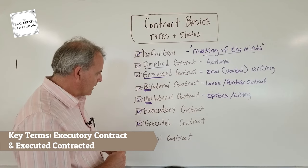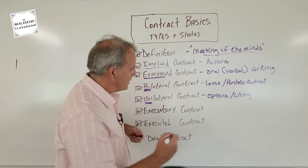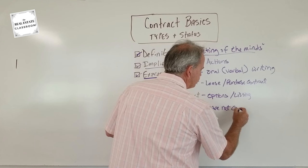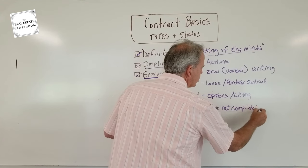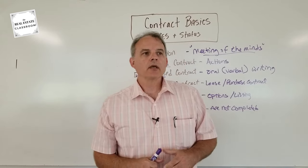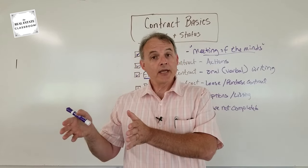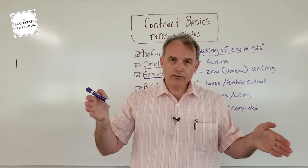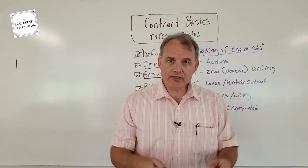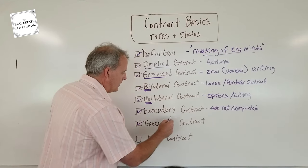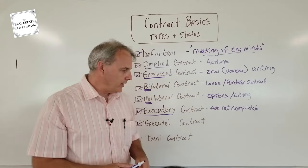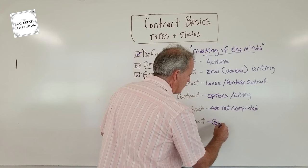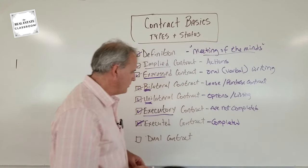Two more concepts: executory and executed contracts. An executory contract means the terms of the contract are not completed yet. For example, when a buyer and seller agree to a purchase contract and sign their names, it's a legally binding contract, but it hasn't closed yet. That period between contract and close is considered executory. Once closing happens, the contract is executed — meaning all the terms have been completed.